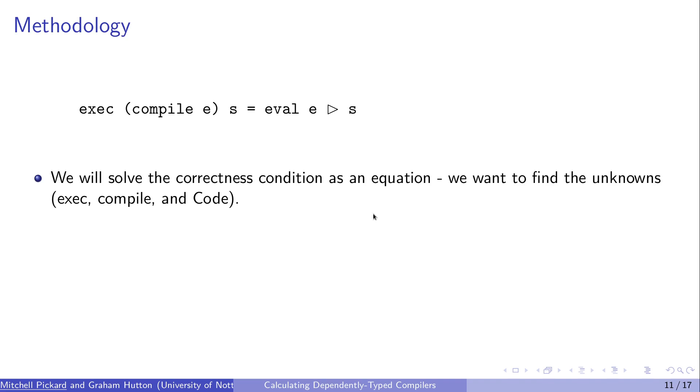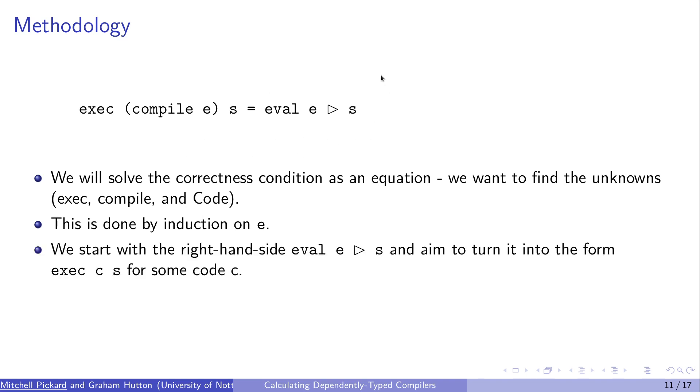Now how are we actually going to do the calculation? So we have this correctness condition from before and we want to solve this as an equation. We've got some unknowns here that we need to find. The unknowns in this case are the compiler, the execution function, and the actual code type for the abstract machine. This whole calculation process is going to be performed by induction on E, on our expression type, and we'll always start from this right hand side. So we'll start from eval E on top of some stack S, and we want to turn it into a form that eventually is going to look like this left hand side.